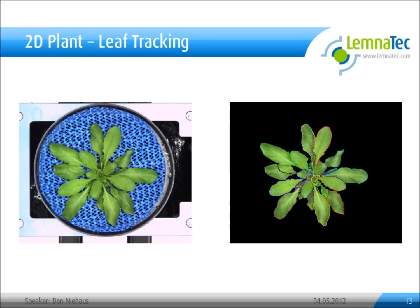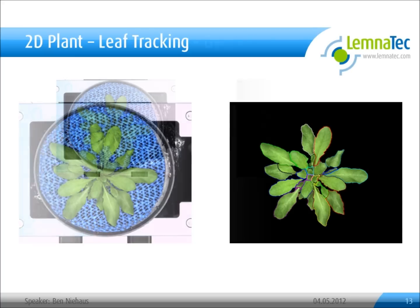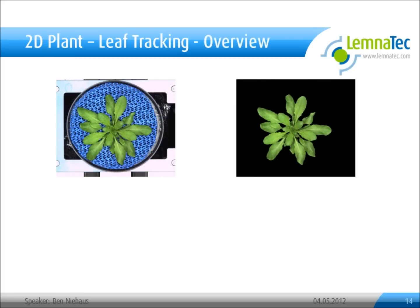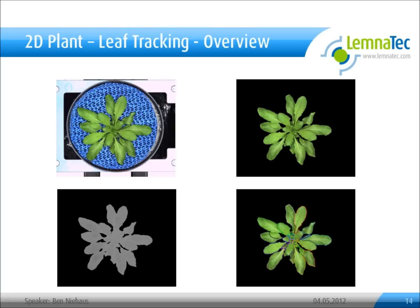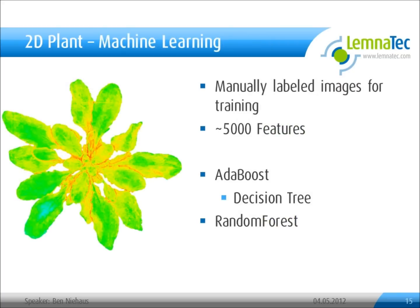We use a combination of machine learning and graph-based image segmentation to segment each leaf individually. First, we identify our object using foreground-background separation. Then a machine learning algorithm calculates the probabilities for each pixel, indicating that the pixel belongs to a leaf edge. On the left side you'll see the probability mask where red color indicates a high probability that the pixel belongs to a leaf edge. This mask was created by a random forest classifier trained with 5000 features and on manually labeled images.